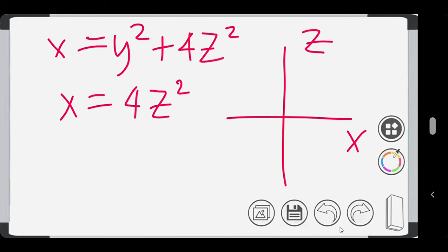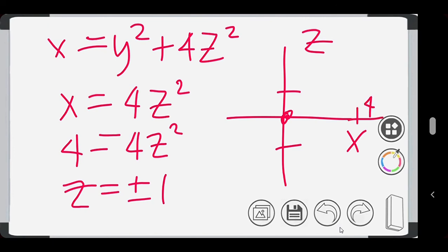With the vertex in the origin, 0, 0. Now, finding another coordinate, we set x is equal to 4 again. And we can solve for the value of z, which is positive and negative 1. Now, for x is equal to 4, our z is equal to positive and negative 1. That's why, again, our parabola opens rightward or opens in the positive x direction.